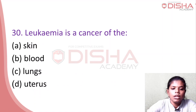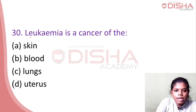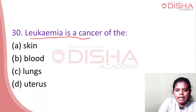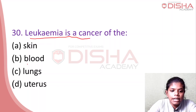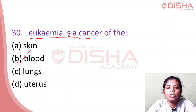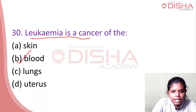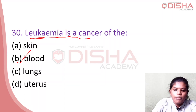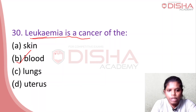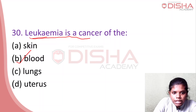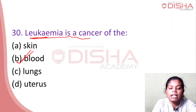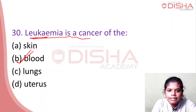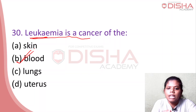Leukemia is blood cancer. Blood cancer causes abnormal production of blood cells, and this disease is called leukemia.